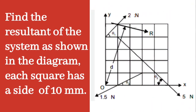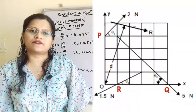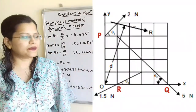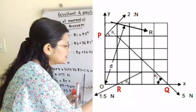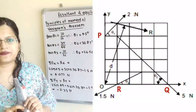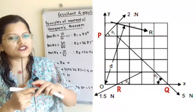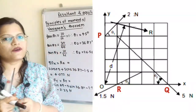Given question: find the resultant of the system as shown in the diagram. Each square has a side of 10 mm. Let us understand the given question with the help of the diagram. We will first resolve these forces into two components: horizontal component and vertical component.